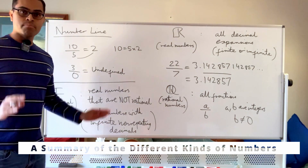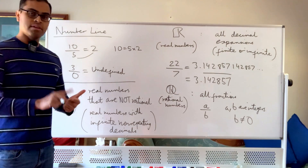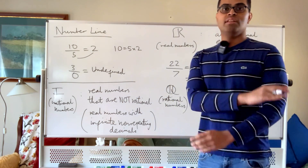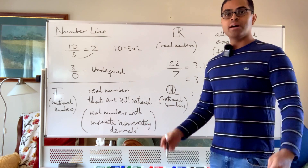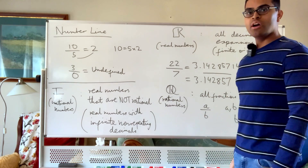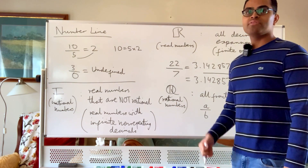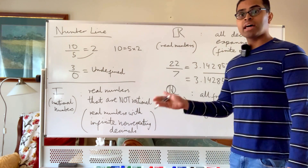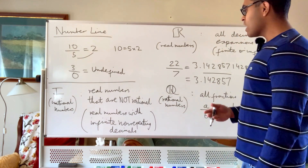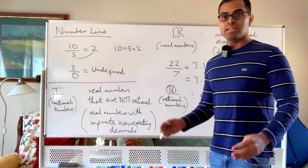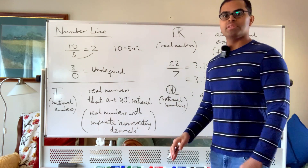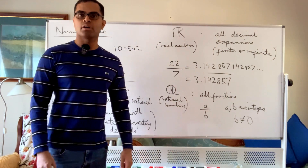So to summarize: natural numbers are 1, 2, 3, 4, 5, and so on. Integers extend that to include 0 and negatives: -1, -2, -3, etc. Rational numbers include all integers and all fractions, which can be written as finite decimals or infinite repeating decimals. Irrational numbers are real numbers with infinite non-repeating decimals that cannot be represented as fractions. And the real numbers — all rational and irrational together, all decimals finite or infinite — are what we call the number line.